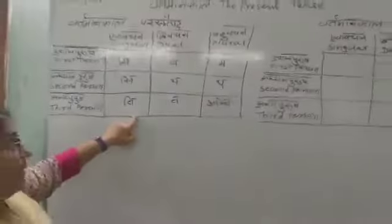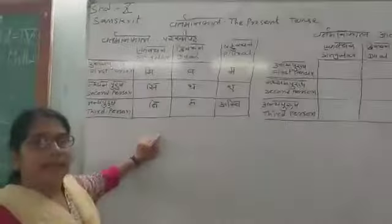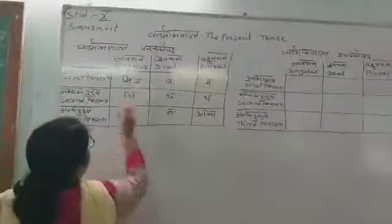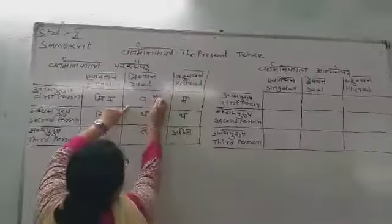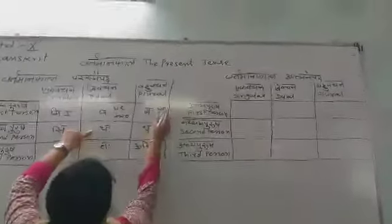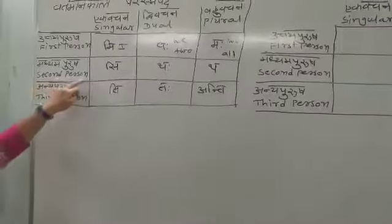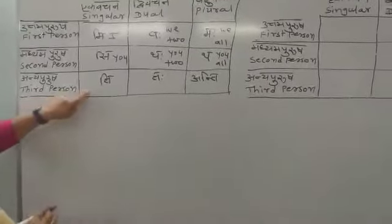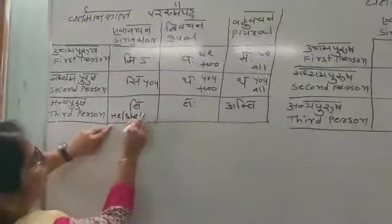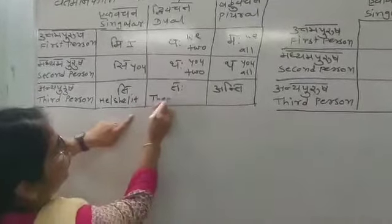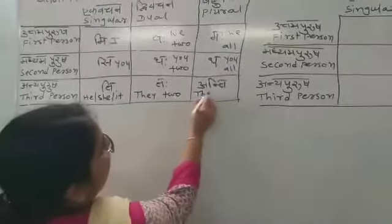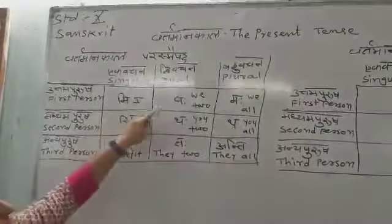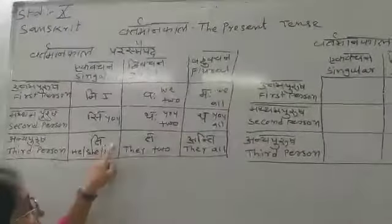We have learnt this in ninth standard, but once again we have to see it as it is asked in the tenth board exam. 'Mi' means I. 'Vah' means we two. 'Mah' means we all. In the same way, Madhyama Purush second person: 'si' means only you, 'thah' means you two, and 'thah' means you all. Anya Purush third person: 'ti' means either he, she, or it. 'Thah' means they two. And 'anti' means they all.